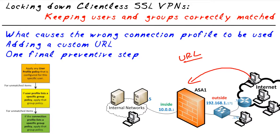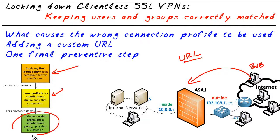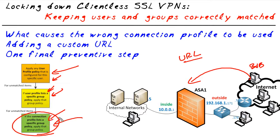Even worse — if the user picks the wrong connection profile and they authenticate, what happens is the policies from that user profile — let's say it's Bob — get applied, and anything not specifically listed in Bob's profile is going to have Bob's group policy applied. But if he came in on, for example, the sales connection profile, then whatever didn't get inherited from those two policies he's going to get from the wrong group. You're having a user authenticate successfully but still get incorrect policies because of the wrong connection profile he came in on.